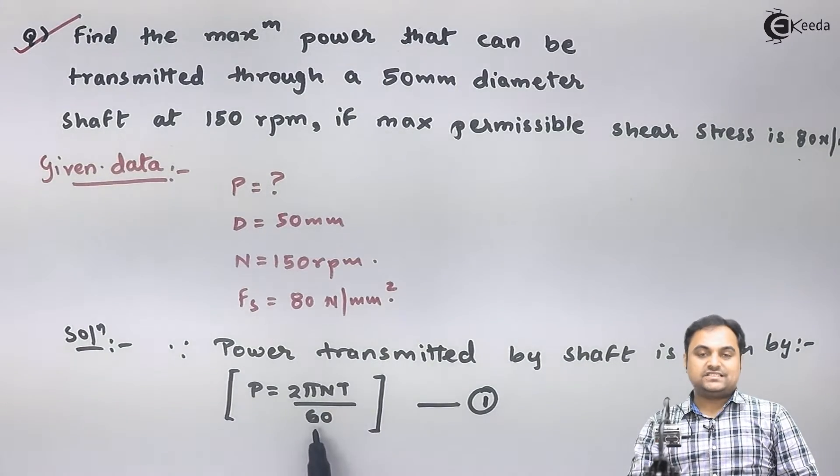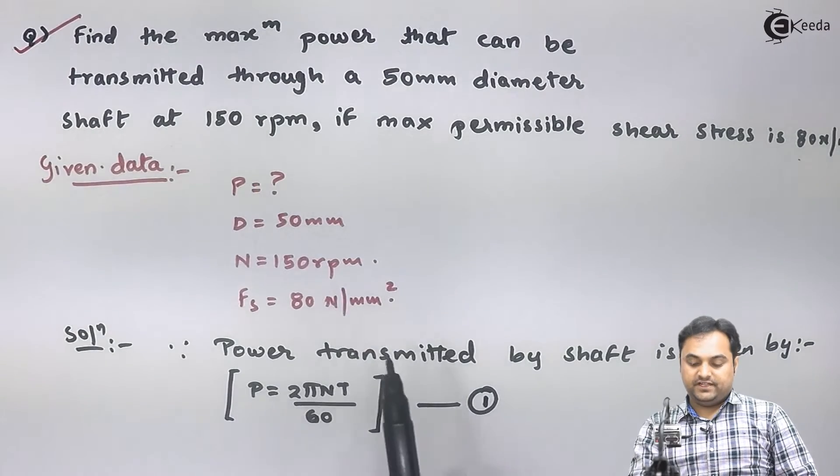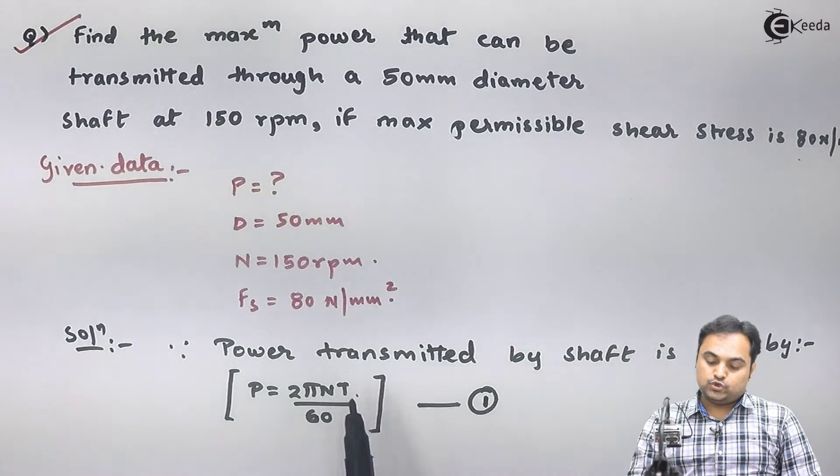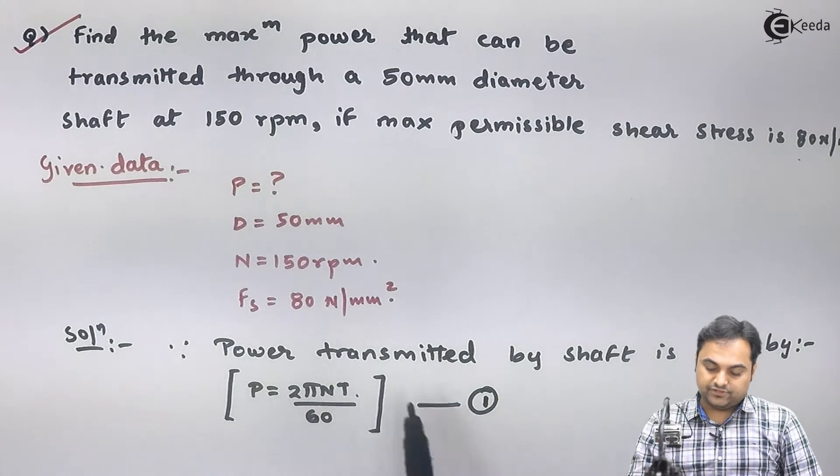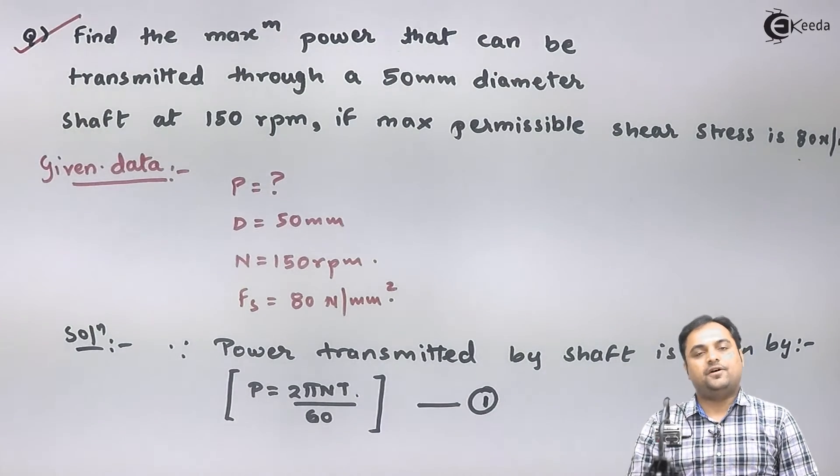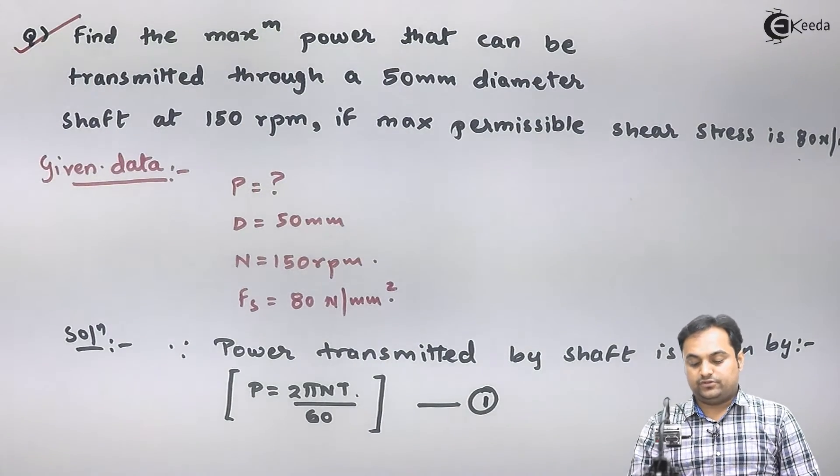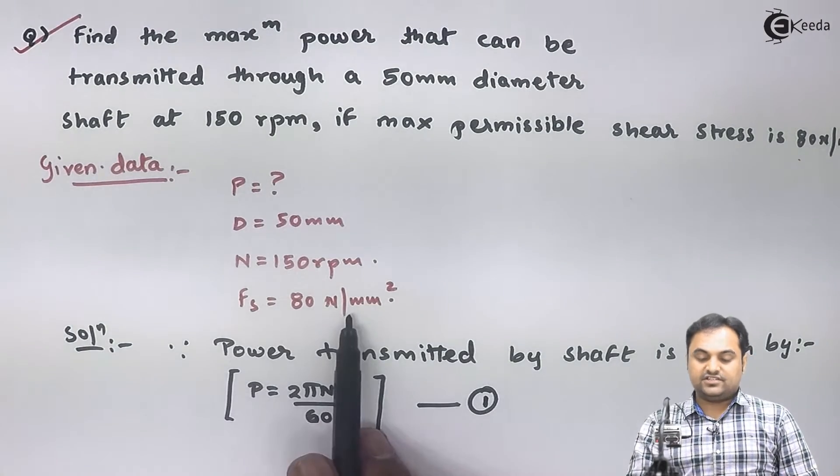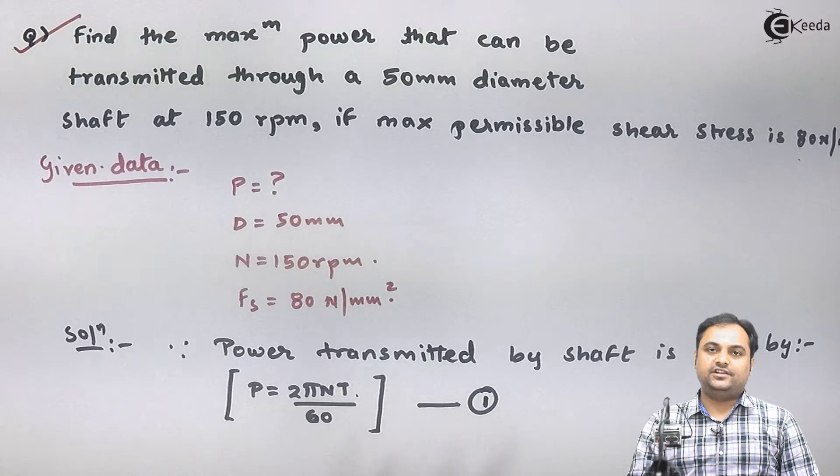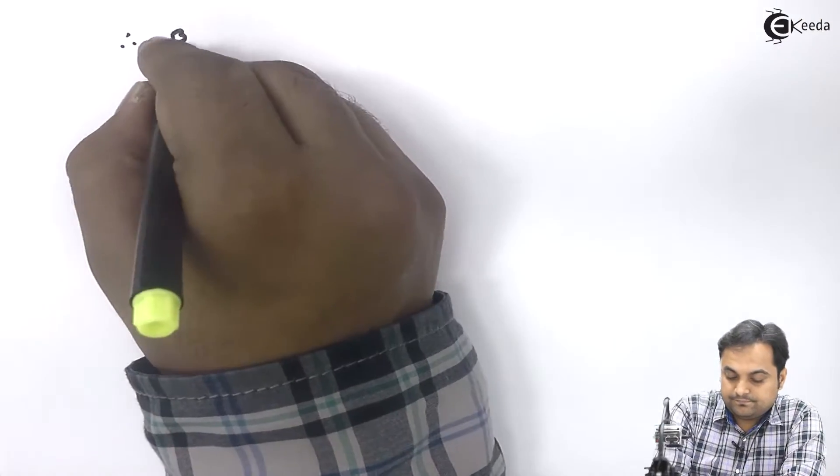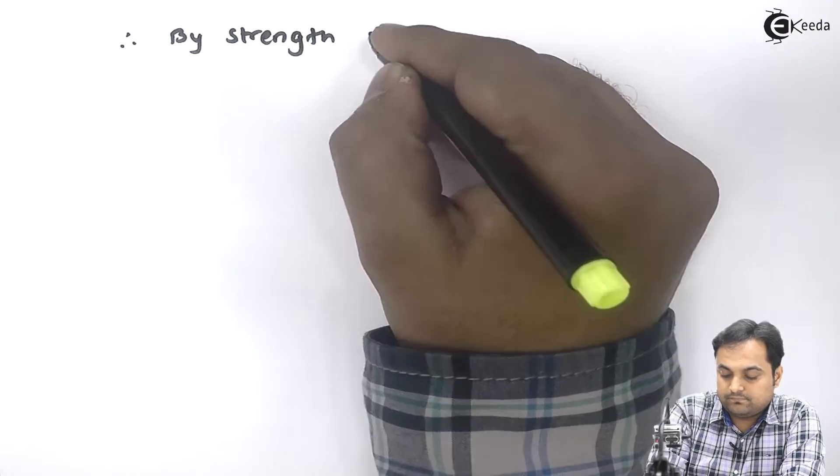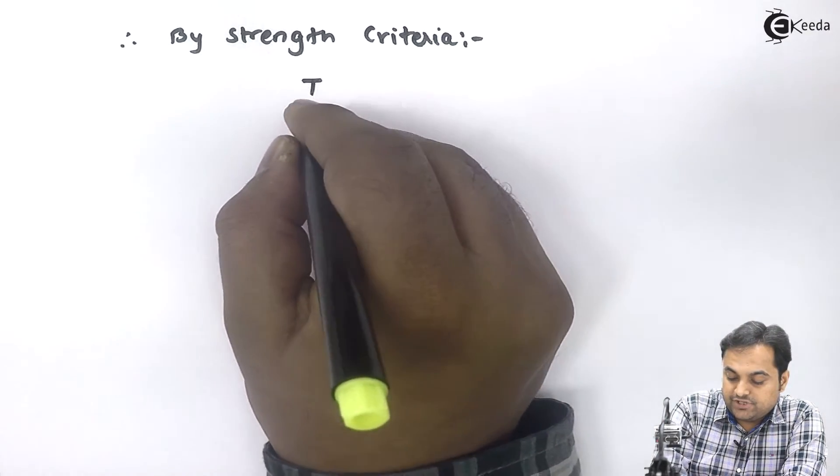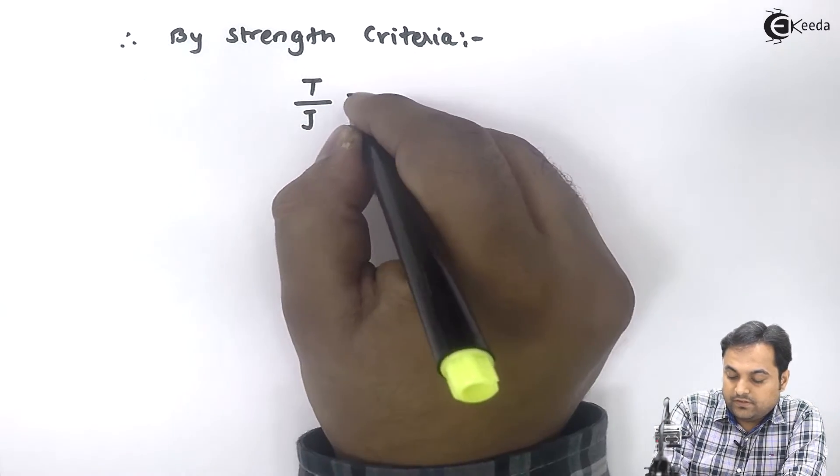As we see, power is asked. 2π and 60 are constants, rpm is given as 150, only unknown is capital T, the torque. So if we can get the value of torque, we will put all values in equation one and get the answer. Since FS is given, we will use the strength criteria: T/J = FS/R.